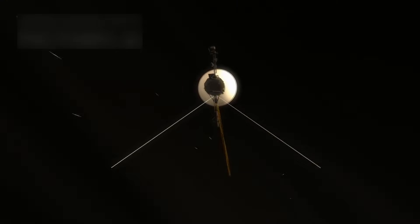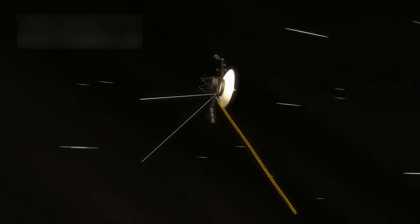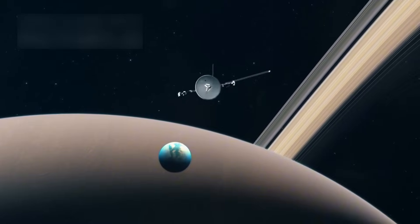As Voyager 1 kept flying, it continued to operate decades past its expected lifespan. It has now been working for over 45 years, traveling more than 14 billion miles from Earth.